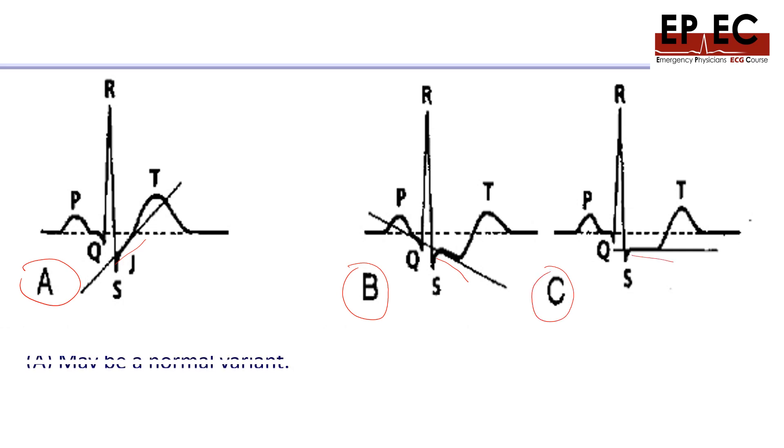The upsloping type can be normal but also can be abnormal. The downsloping and horizontal types are usually abnormal. These are three different shapes of ST depression.